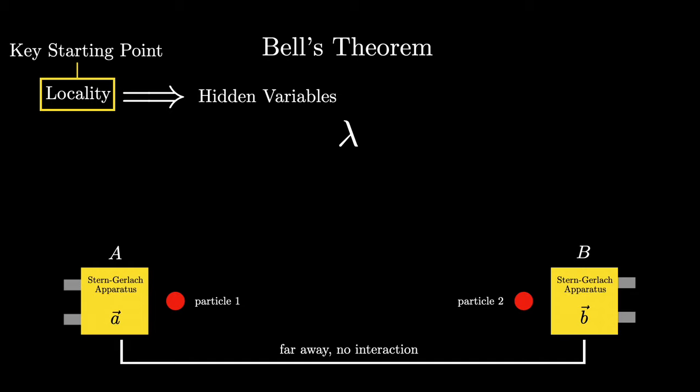Since the results of each measurement will simply be up or down, we can choose to represent up with a plus one and down with a minus one. The results at each apparatus could then be represented by the following, where A is the orientation of the left Stern-Gerlach apparatus and B is the orientation of the right Stern-Gerlach apparatus. And the locality assumption means that the result for particle two does not depend on the direction of A, nor does the result for particle one depend on the direction of B.